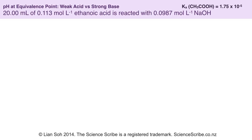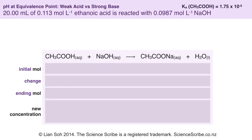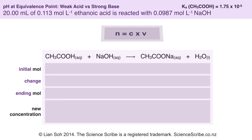To calculate the pH at equivalence point we're going to use an ICE table — we've seen ICE tables in a previous video on buffer calculations. To work out the initial moles of ethanoic acid in the flask, I need to use the formula N = C × V. My concentration and volume are given in the question; I just need to make sure the volume is converted into litres.